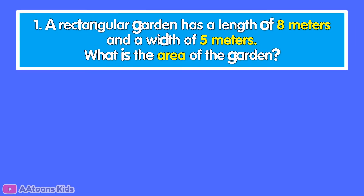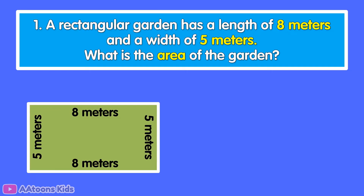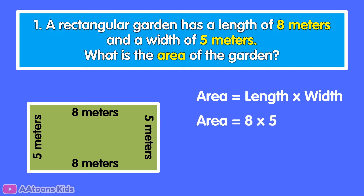A rectangle problem. A rectangular garden has a length of 8 meters and a width of 5 meters. What is the area of the garden? The area equals length multiplied by width. Length is 8 meters and width is 5 meters. 8 multiplied by 5 is 40, so the area of the rectangular garden is 40 square meters.